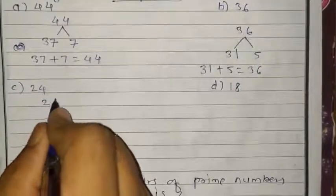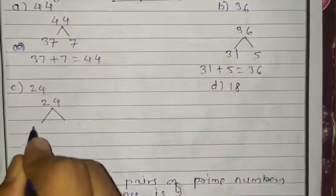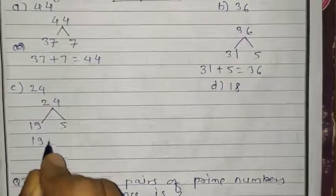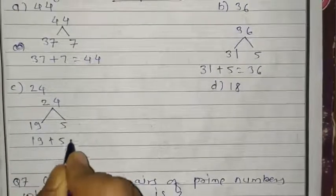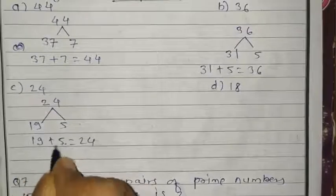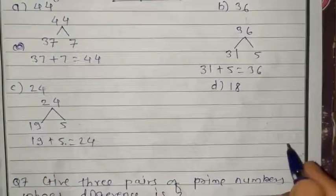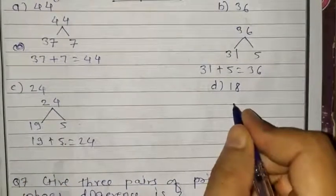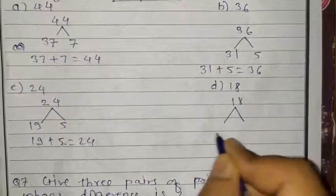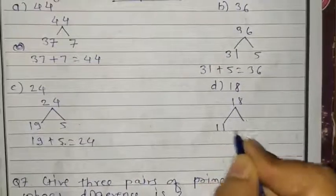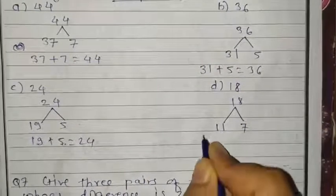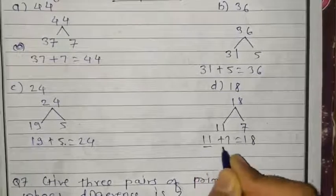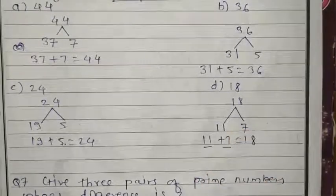For 24: take 19 and 5, because 19 plus 5 is 24. These 2 numbers, 19 and 5, are odd primes. For 18: take 11 and 7, because 11 plus 7 is 18. These 2 numbers are also odd primes. In this way, this question is quite easy.